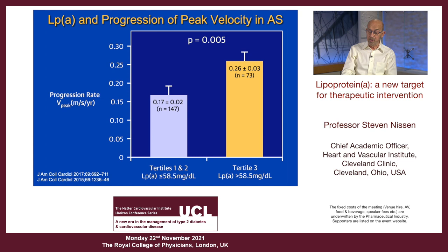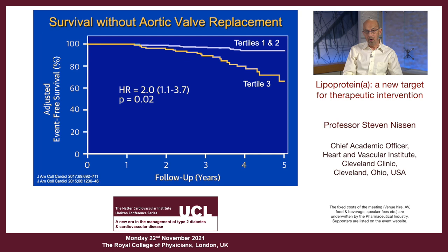This is really quite extraordinary data. If you're in the first and second tertile for lipoprotein A, this is your survival rate without aortic valve replacement. In tertile 3, within five years, a very substantial number of patients — maybe as many as 40% — have either died or progressed to aortic valve replacement. The hazard ratio here is 2.0. Again, a very powerful risk factor.